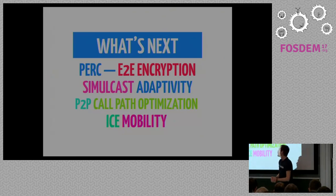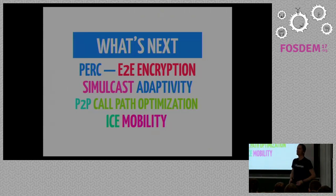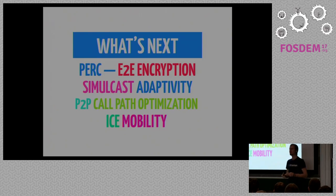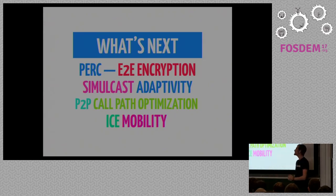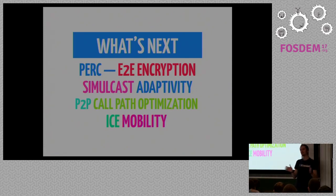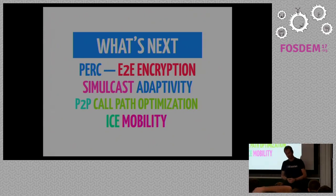So that worked - that's cool. What's next? What are we working on? We're working with the PERC IETF working group to have fully end-to-end encrypted conference calls. This is quite tricky - it requires that you use SRTP twice, like you double encrypt. So far nobody has it. We are working with someone doing a modified version of Chrome, and hopefully once the standards are stabilized we can use it - we're prototyping this. We're also working on simulcast adaptivity - trying to better adapt to changing network conditions to dynamically change the number of participants you receive or use different resolutions.